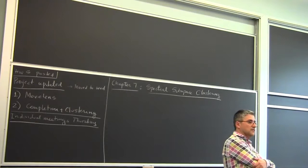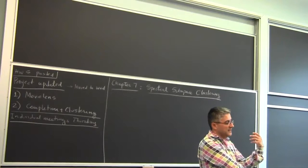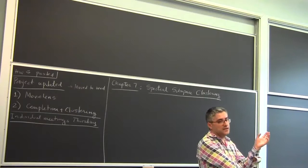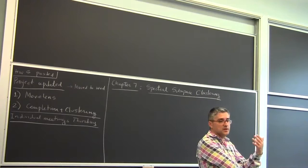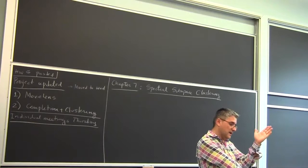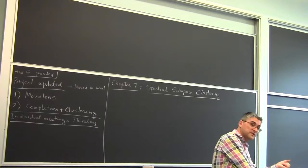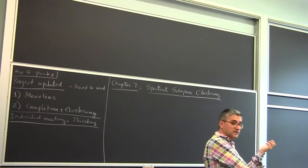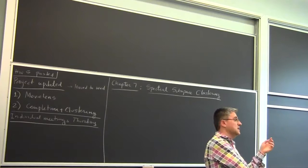K-subspaces follows an iterative procedure. Given an initial clustering, you do PCA on every group. Then once you have a basis for every subspace, you use that basis to assign each point to the closest subspace. By iterating between subspace learning and point assignments, because you're minimizing an objective function and doing alternating minimization, you eventually converge in a finite number of steps, but you're only guaranteed to converge to a local minimum. To address the local minimum problem, we need some good initialization, and we discussed initialization techniques for PCA.